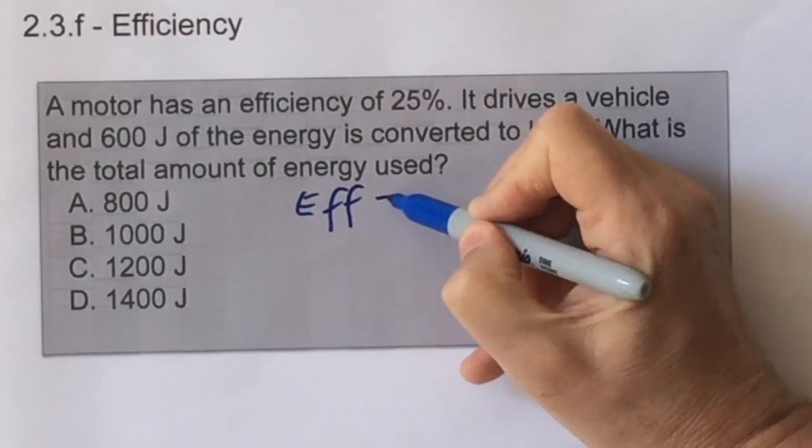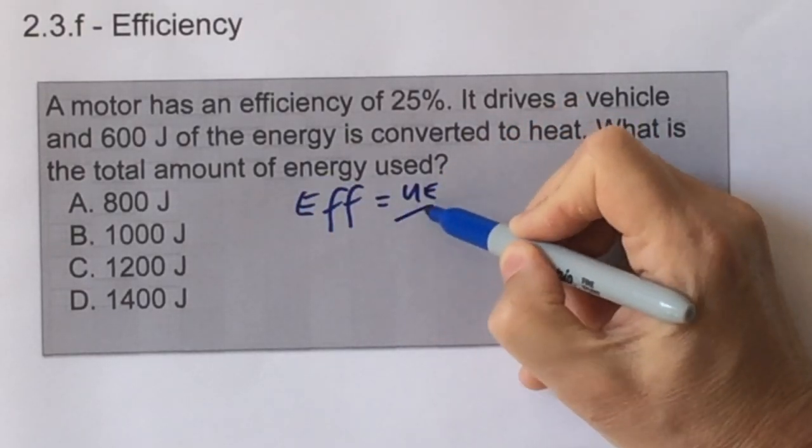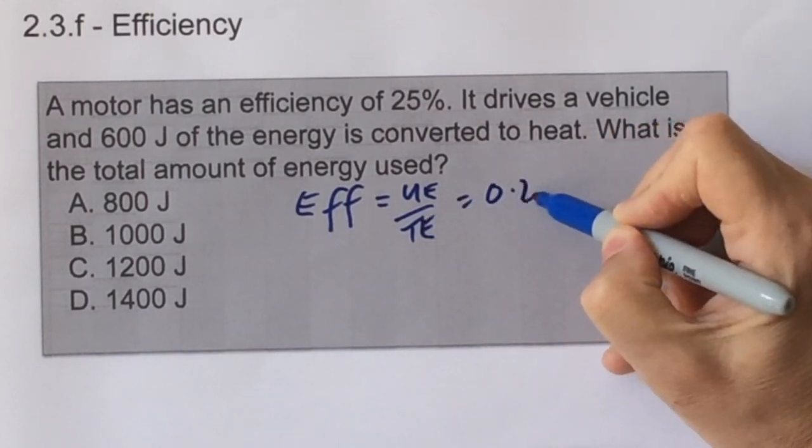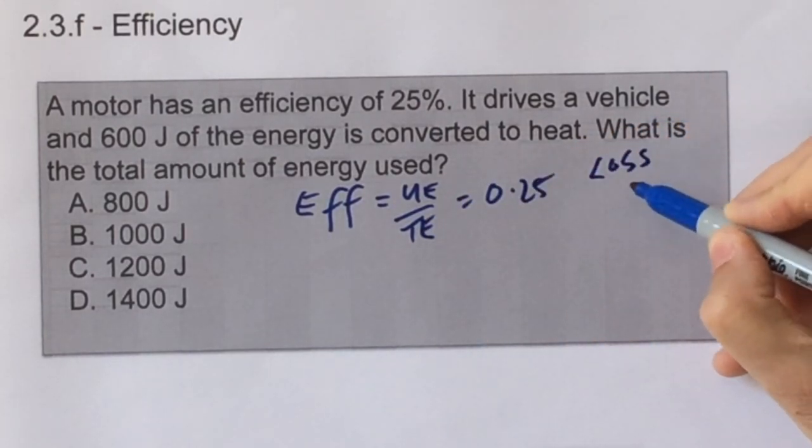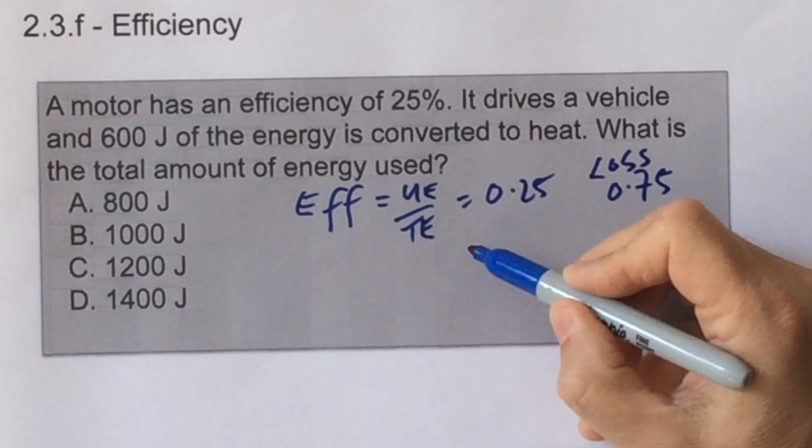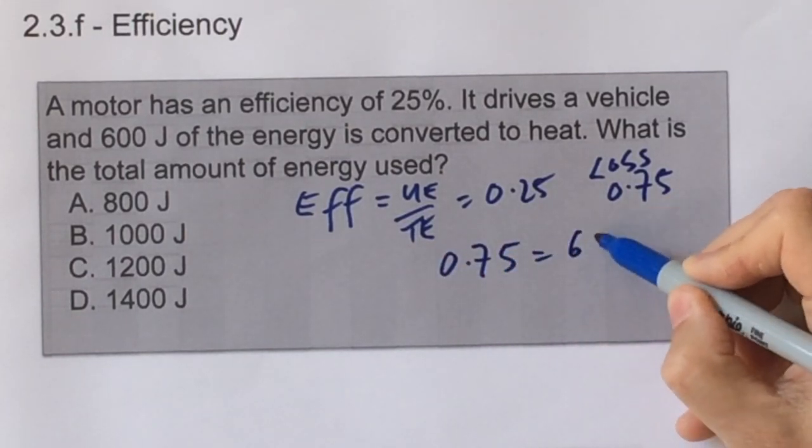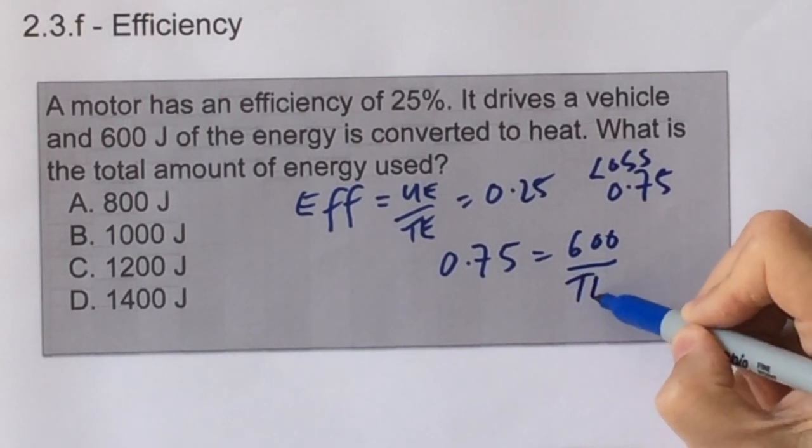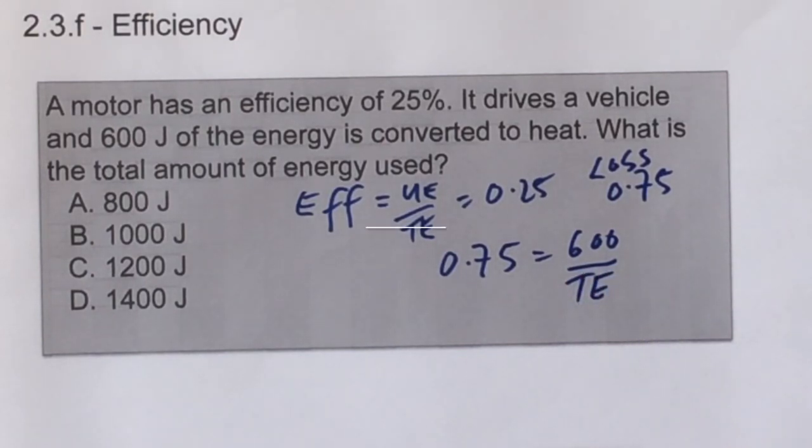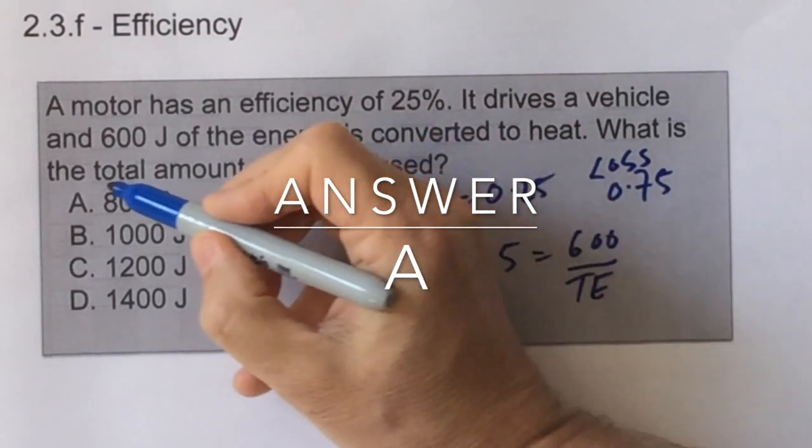The formula for efficiency is the useful energy divided by the total energy. We know that's 25%, which means that 75% of the energy is lost, and we're told that is also equivalent to 600 joules. So we can write the ratio of 600 over the total, and if we rearrange that we find that the total is 800 joules.